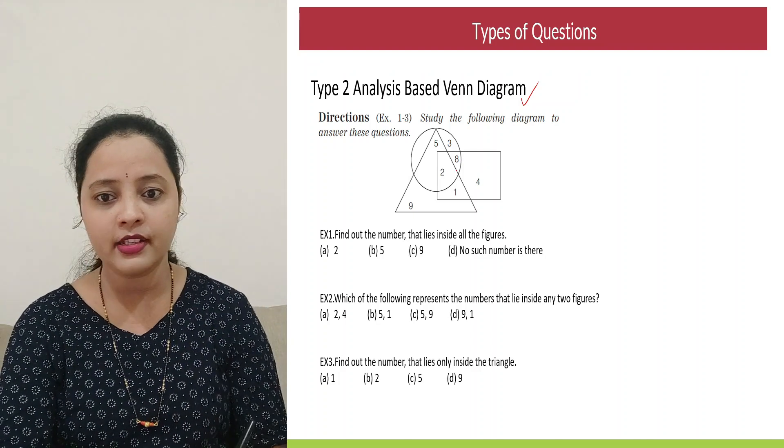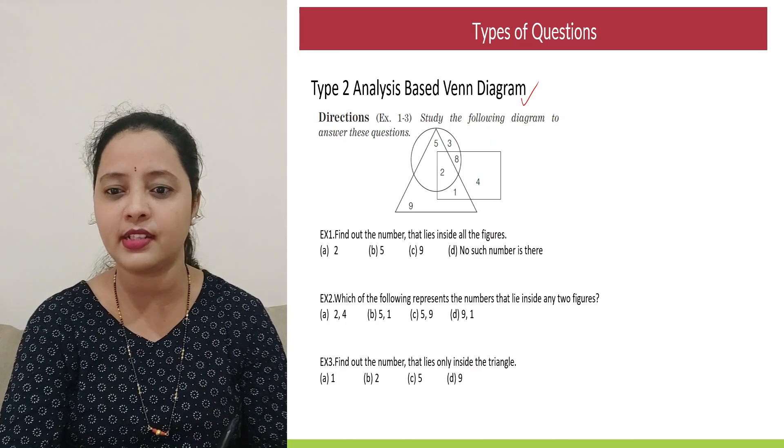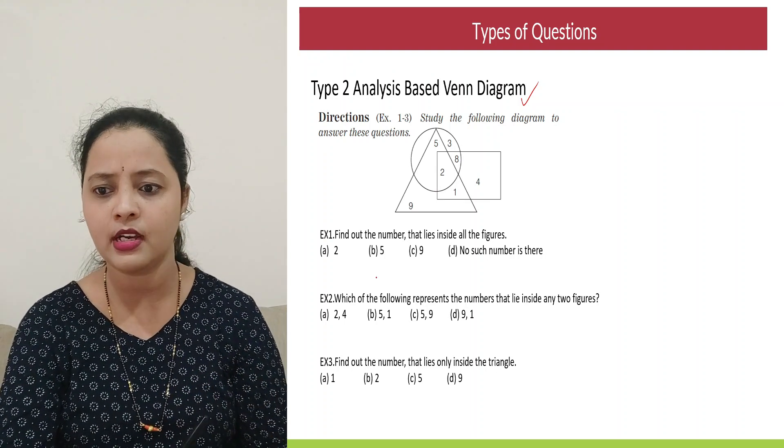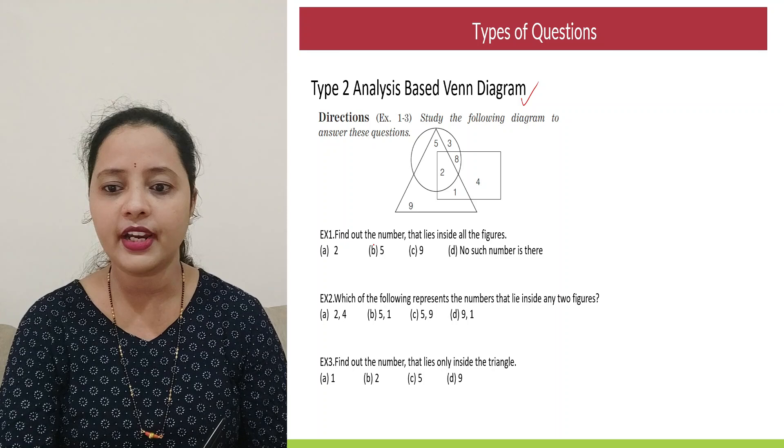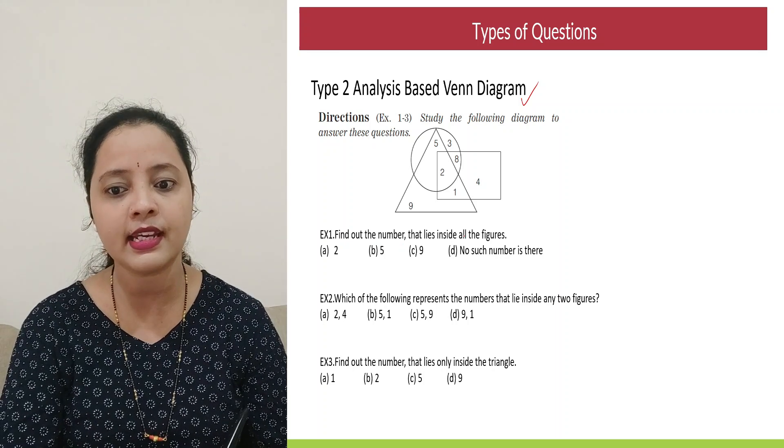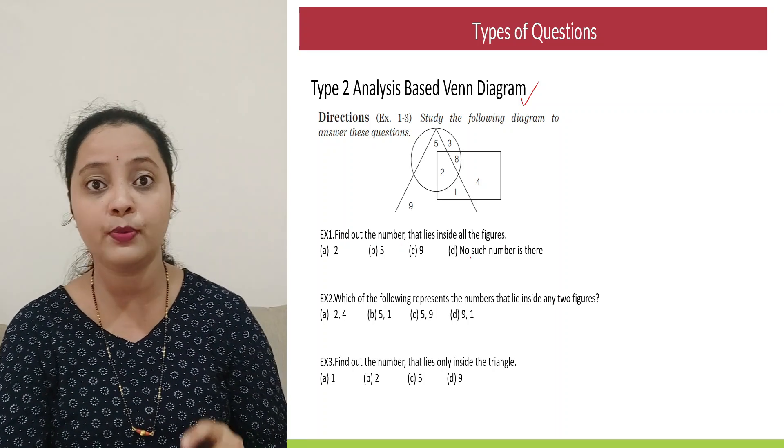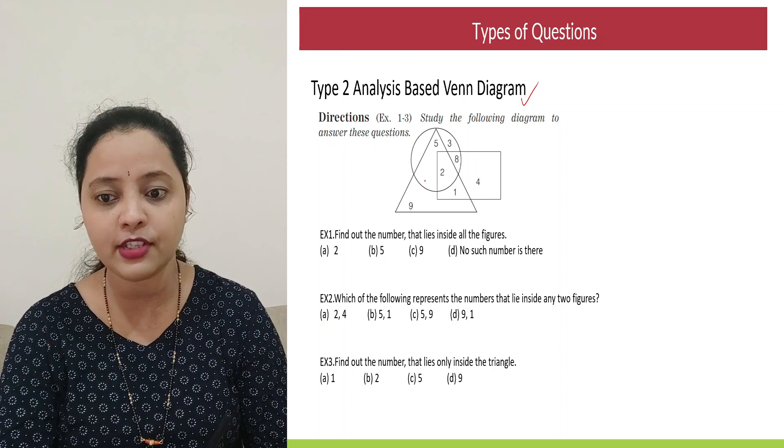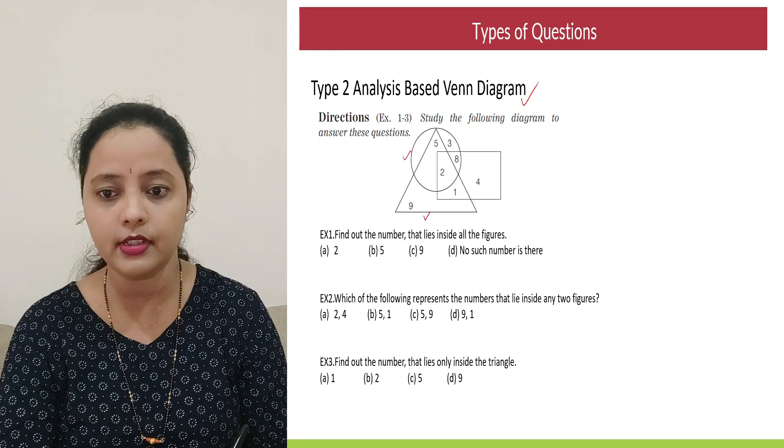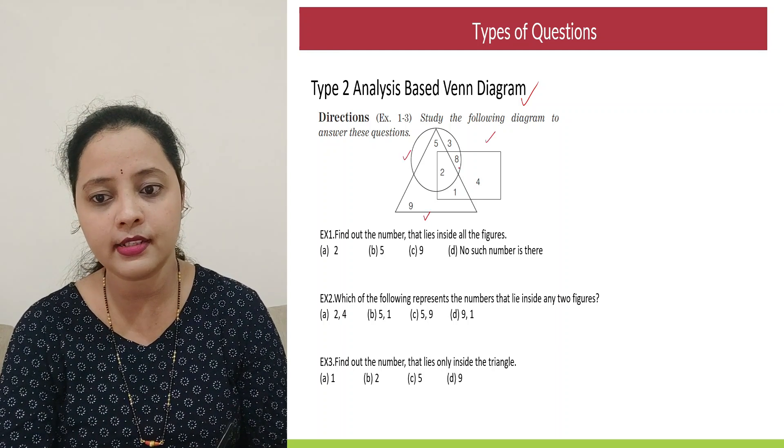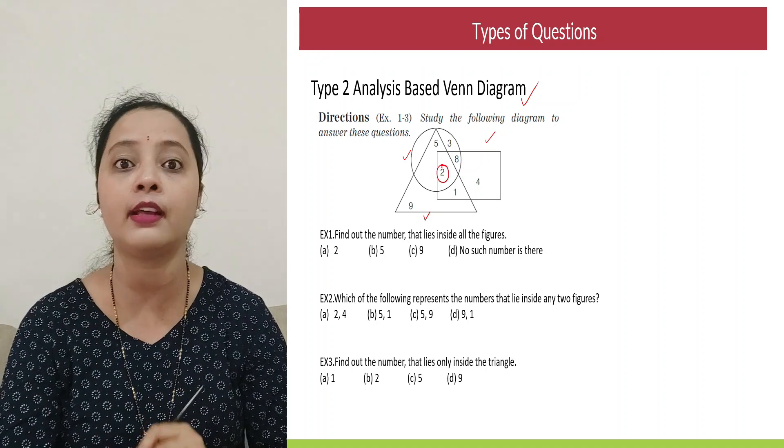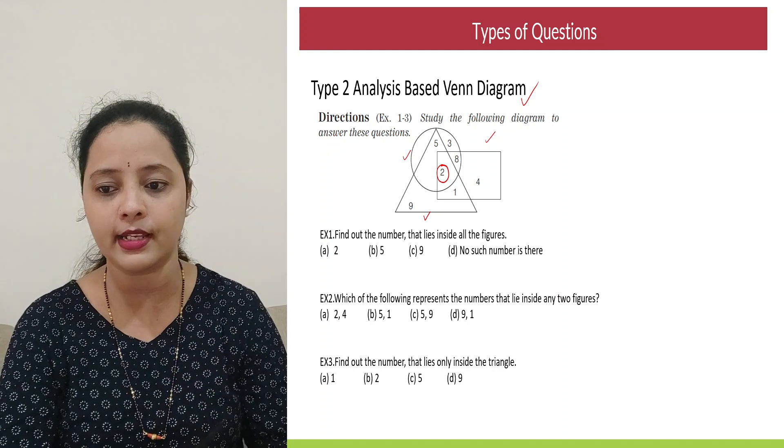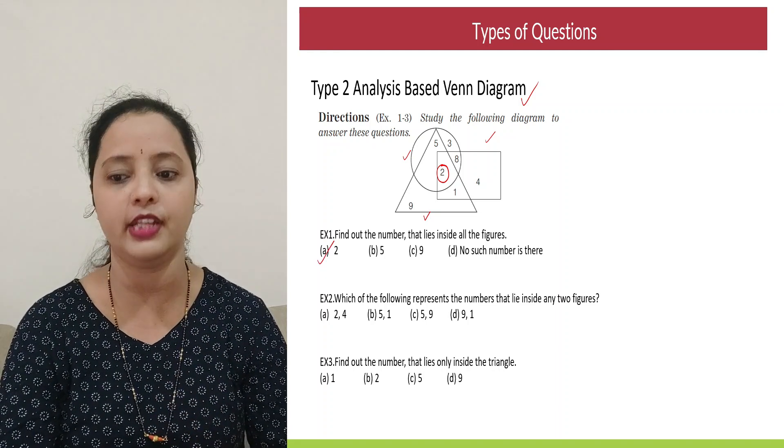So let's see. So study the following diagram they say and answer the question. There are certain circle, triangle, rectangle representing something. Let's see what it is. So the first question says find out the number that lies inside all the figures. So we'll have to pick a number that fits in all the figures. So it's the intersection of triangle, circle and rectangle. Can we see it's the number two? It's a number which is intersecting or it is present in all the three elements. So your answer would be option E.